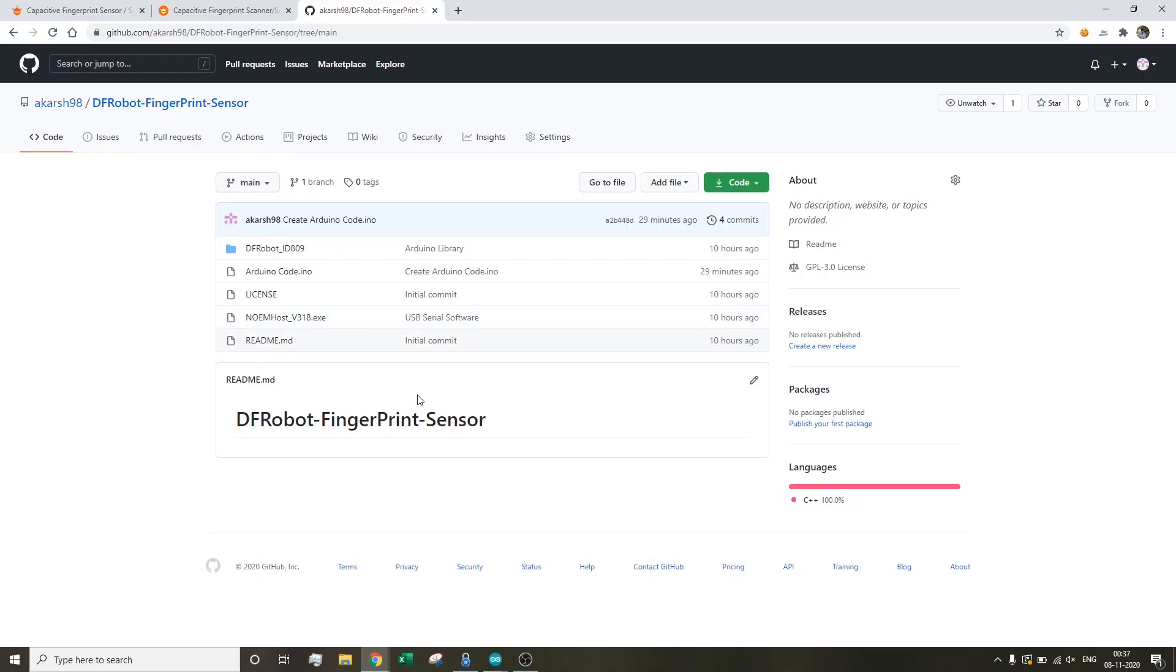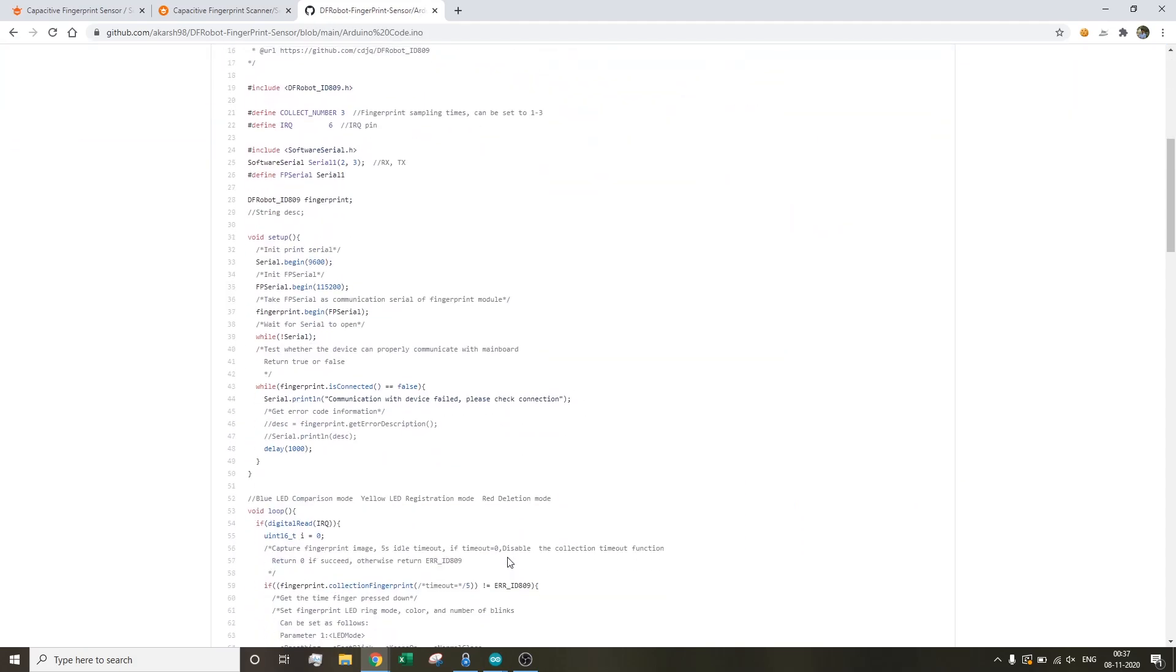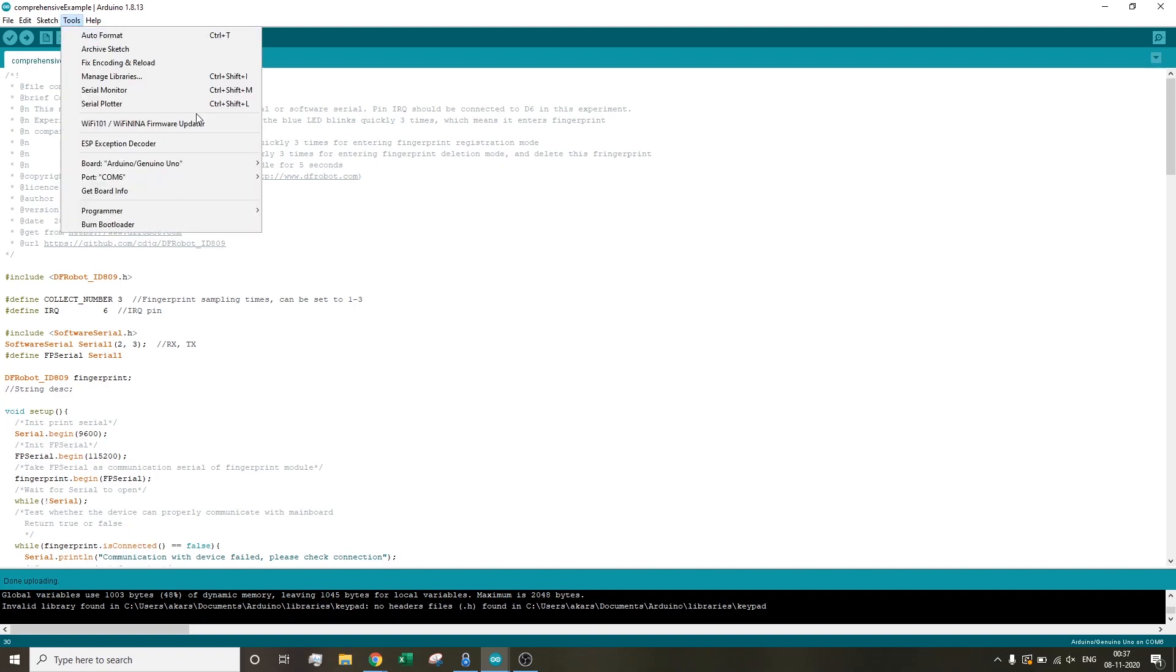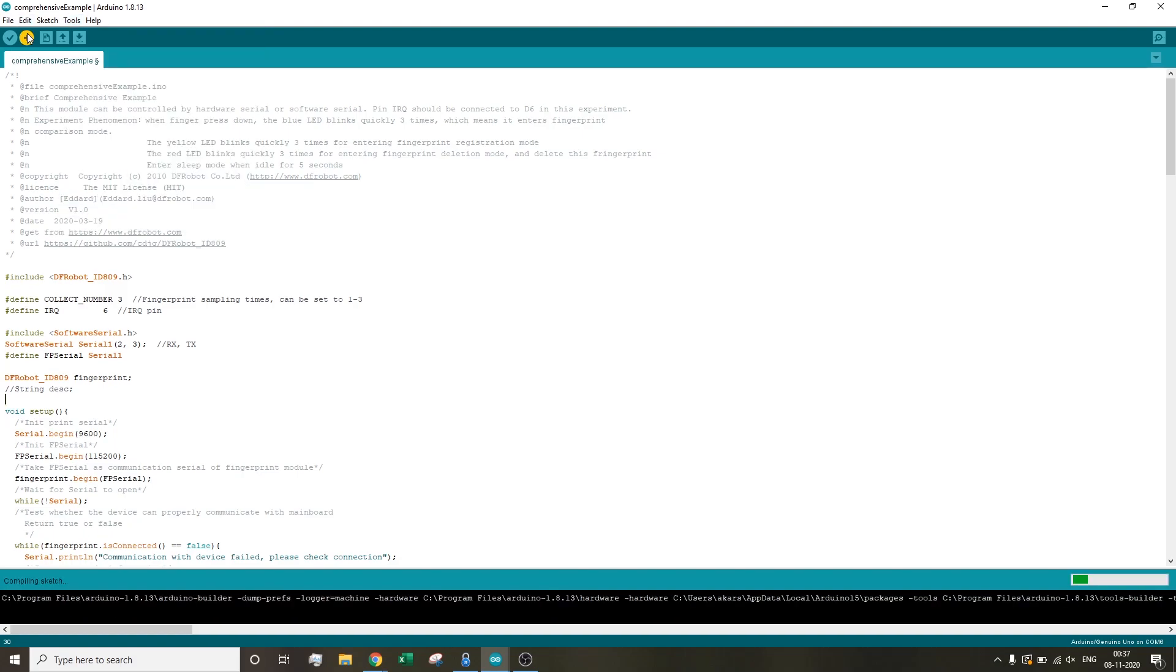All the relevant code and libraries will be on my GitHub repository, the link will be in the video description box below. So first of all you need to download this DF Robot ID809 file because this is the library for the capacitive fingerprint sensor. You need to put this in your Arduino libraries folder. Then you need to head over to the Arduino code .ino, copy this code and paste it into your Arduino IDE. Once you're done with this step, connect your Arduino to the computer, go to the tools menu, select the correct COM port, and hit the upload button.